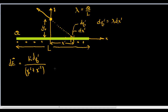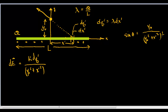We want to look at the upward component vector of this. We'll use sine, and the sine of theta is going to equal y-naught over — I'll write this to the one-half power rather than square-rooting it, because it's just easier to do the math that way — so y-naught squared plus x-prime squared to the one-half power.